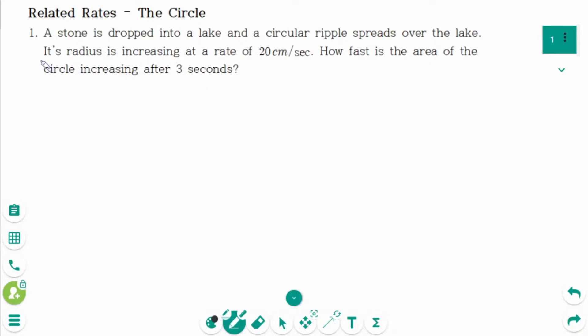Its radius is increasing at a rate of 20 cm per second. This means dr/dt equals 20 centimeters per second. How fast is the area of the circle increasing? We are looking for dA/dt after 3 seconds. That means when t equals 3 seconds.